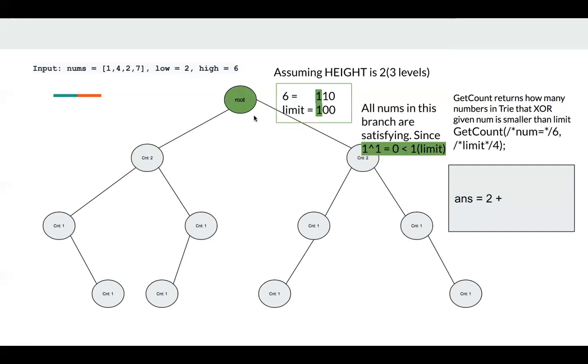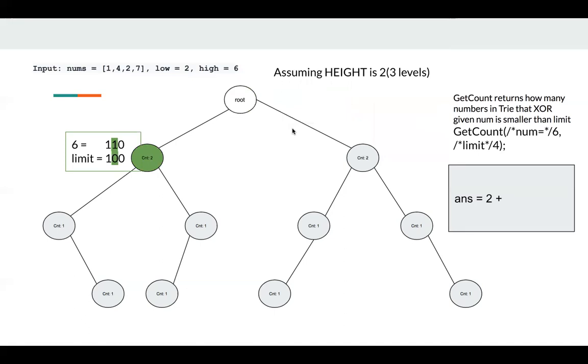So the right node has count 2, and all the counts can contribute to my answer. And I need to go to the left part here, since all the right nodes are smaller than my limit. There's still some nodes in my left part that can contribute to my answer.